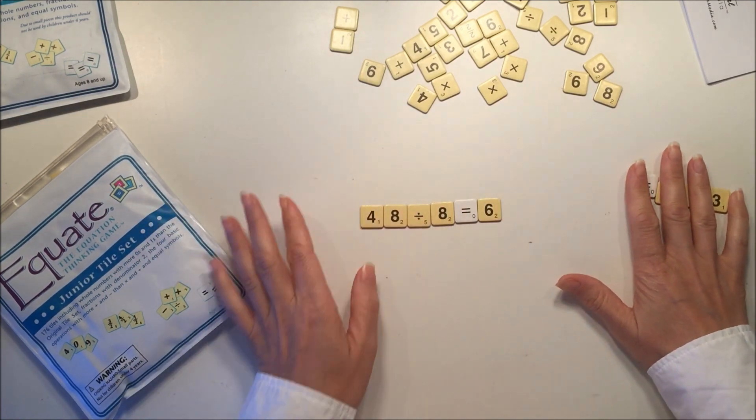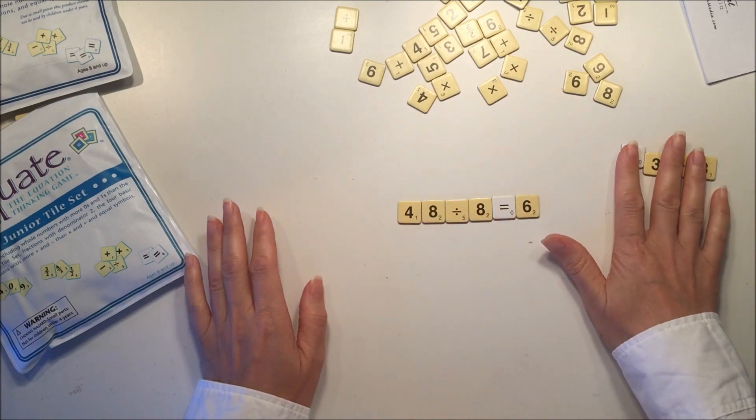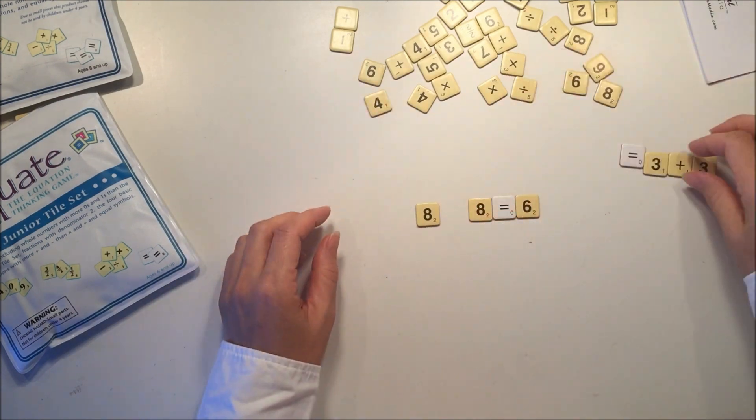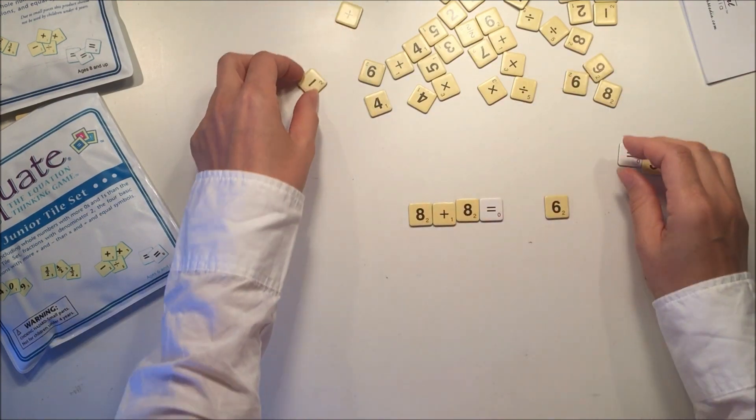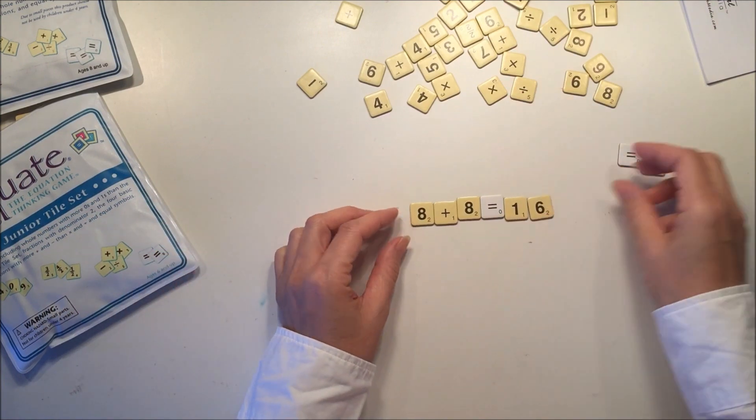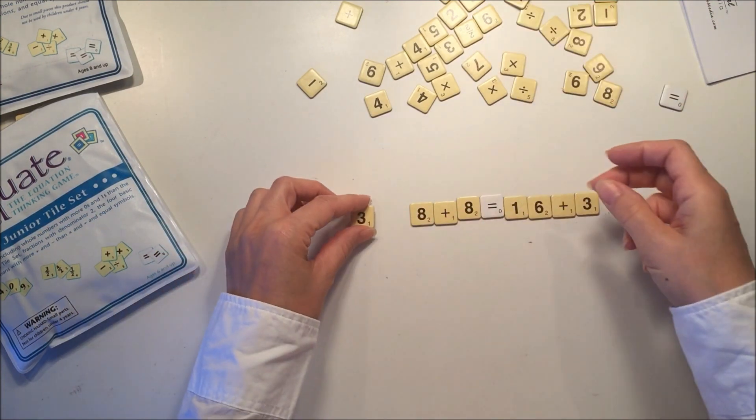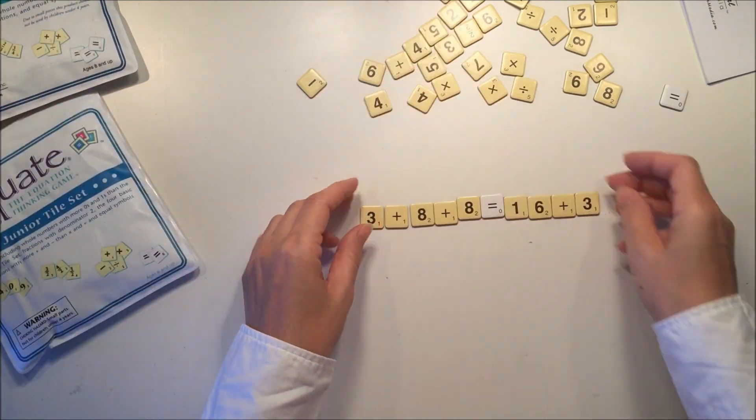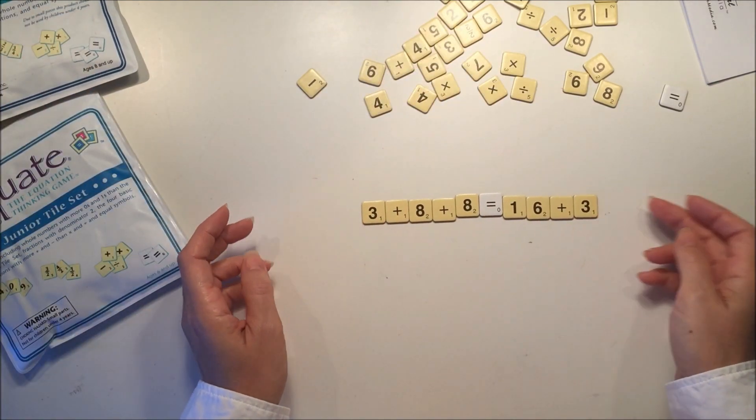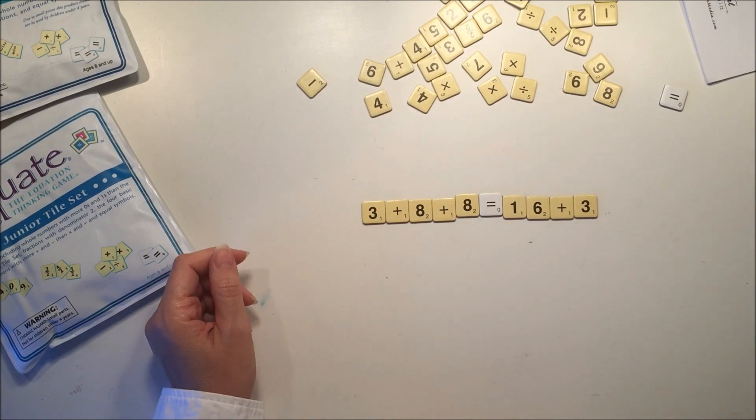I'm just showing you what you can't do. You can't have an equation that you build onto it with another equal sign. However you could have an equation, and right here I have 8 plus 8 equals 16 as one play, and then as another play you could add the addition sign and 3 on either end.